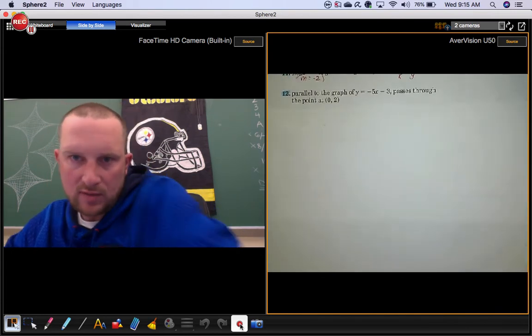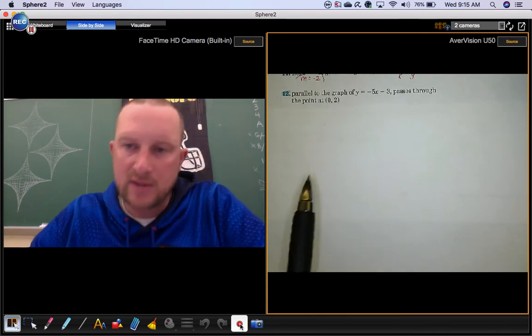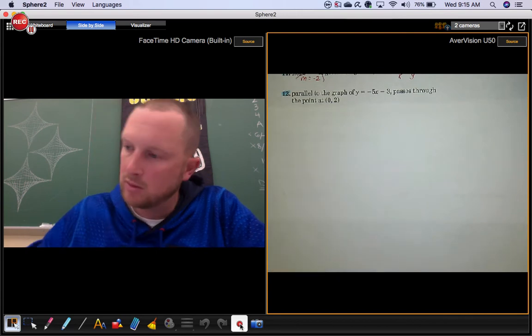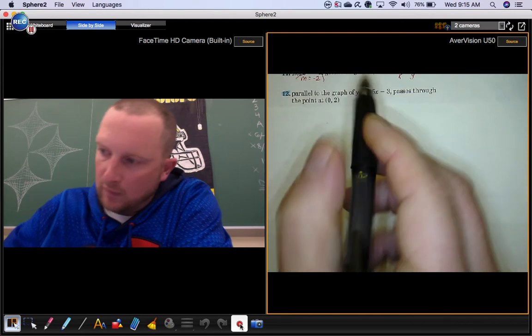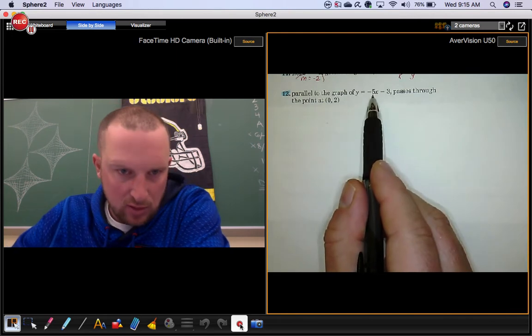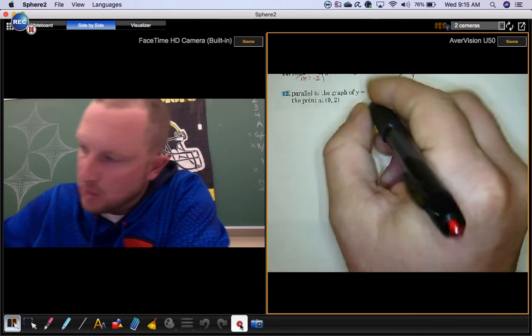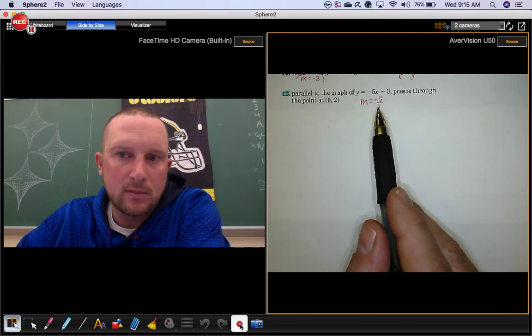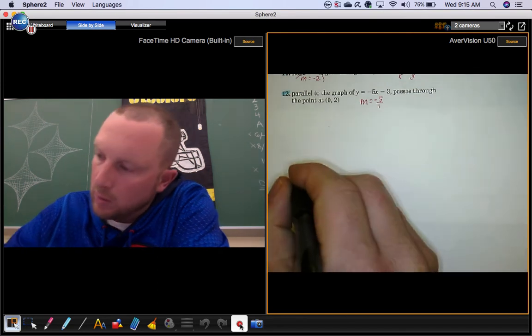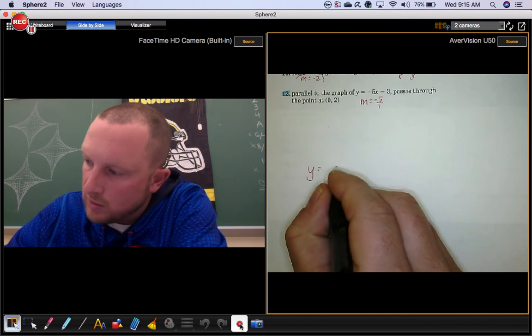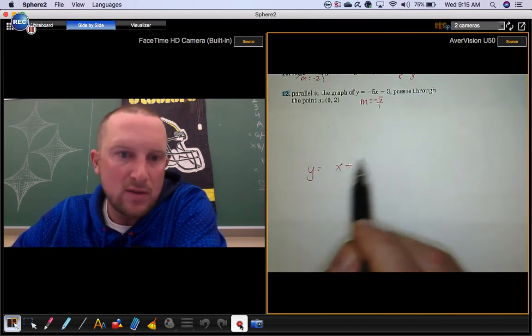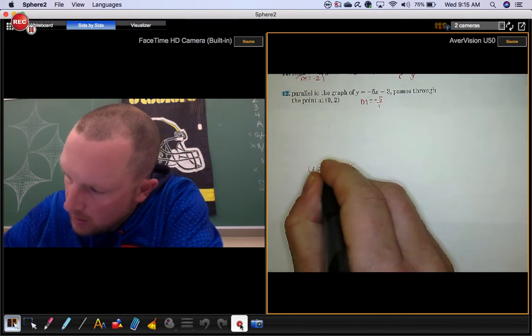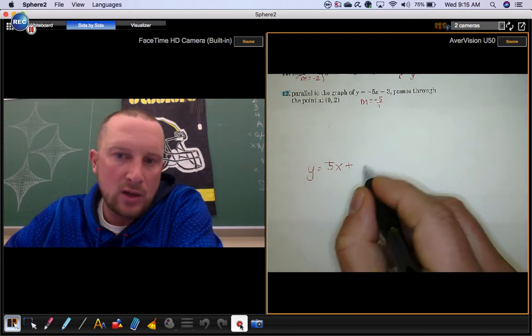We want the equation of a line that's parallel to the graph of y equals negative 5x minus 3, and it's going to pass through the point 0, 2. If you want lines to be parallel, you need to make sure that the slopes are the same. So notice how the slope here is negative 5 or negative 5 over 1. Well, the slope of your answer, y equals mx plus b, the slope of this new line needs to be the same as this because the word parallel is there.